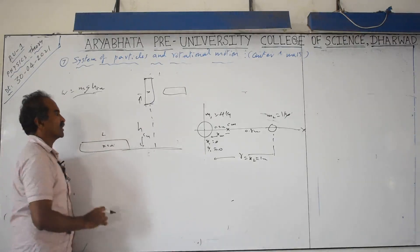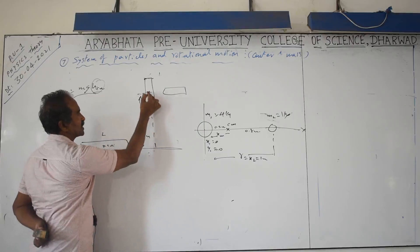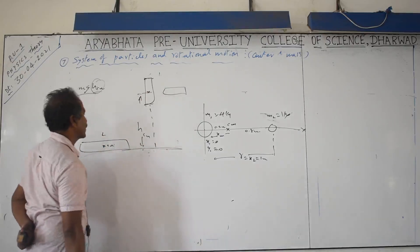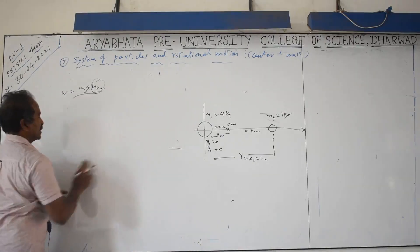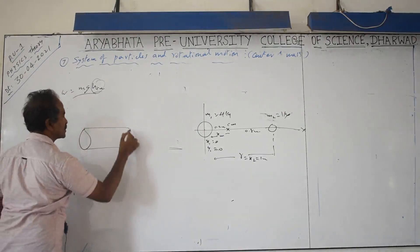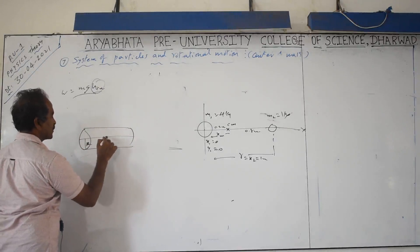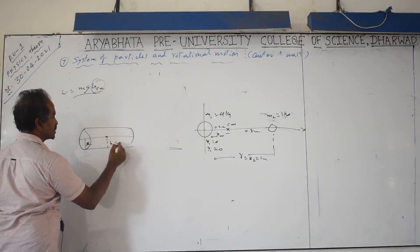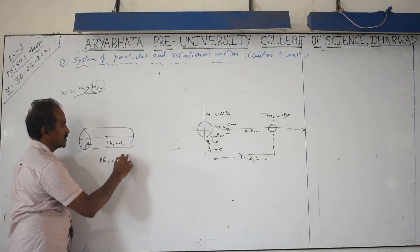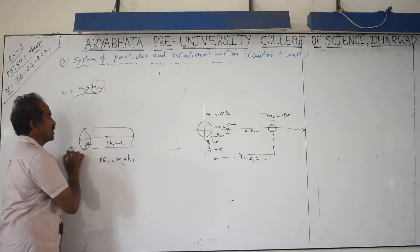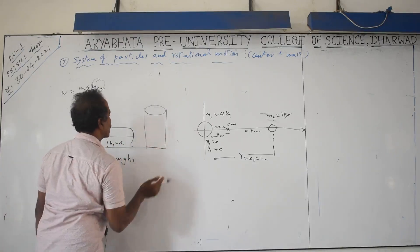For any extended body, work done is always mgh where h is the displacement of the center of mass from the initial position. For a cylindrical rod of radius r and mass m lying on the ground, its initial center of mass height h1 equals the radius. The initial potential energy is mgh1.